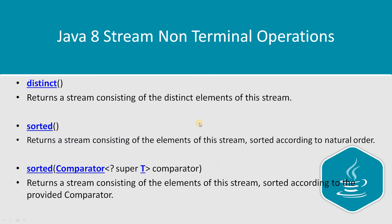Next is distinct. As the name suggests, it gives you a stream of unique elements. Then there is sorted — this sorts your input elements in their natural order. You simply call the sorted function and the result is a sorted stream.